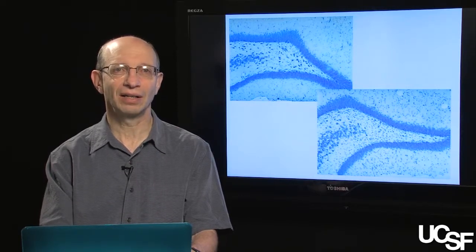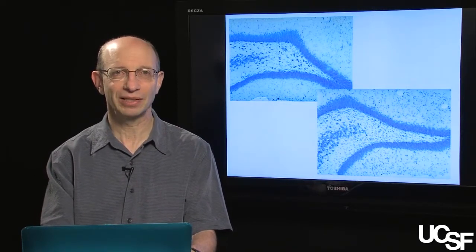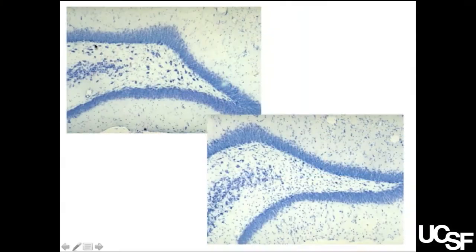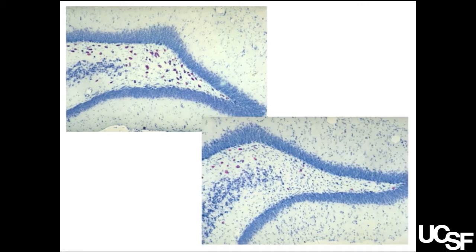Here's another example of an alteration in a network leading to epilepsy. These are slides taken from the rat hippocampus. To orient you a bit, here's a major cell layer called the dentate granule cell layer. Here's another cell layer, the pyramidal cells. You can see a whole bunch of other cells here in this region called the hilus and outside. I want you to look really carefully at this upper left versus lower right panel. Can you see any difference between the two? You have to look really carefully.